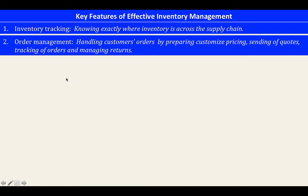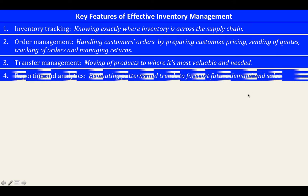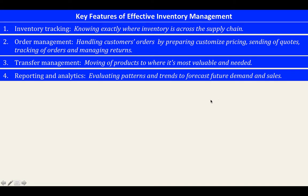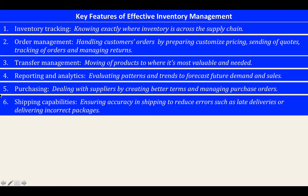The next feature is transfer management — moving a product to where it is most valuable and needed. Then reporting and analytics — evaluating patterns and trends to forecast future demand and sales. Next is purchasing — dealing with suppliers by creating better terms and managing purchase orders. And lastly, shipping capabilities — ensuring accuracy in shipping to reduce errors such as late deliveries or delivering incorrect packages.